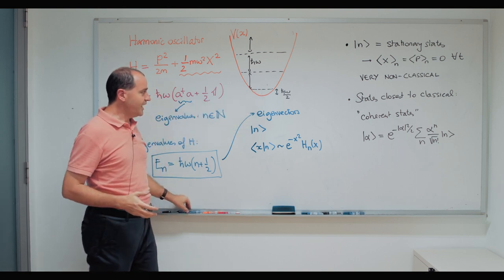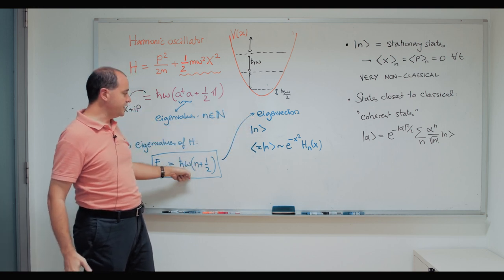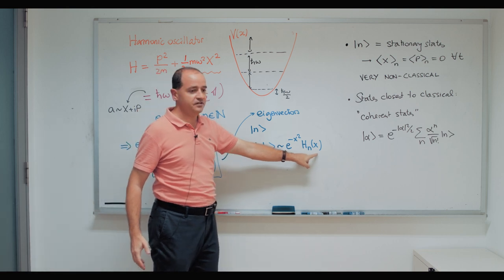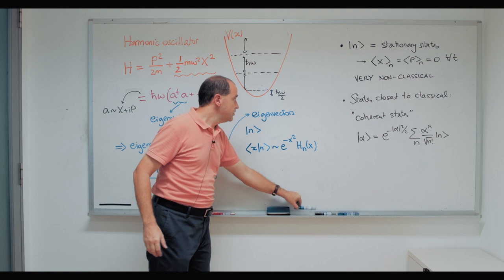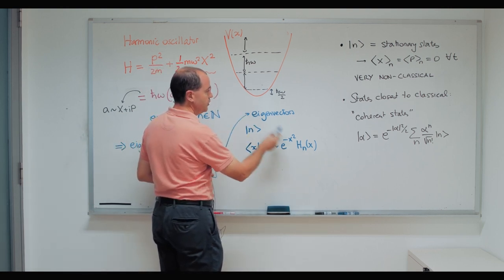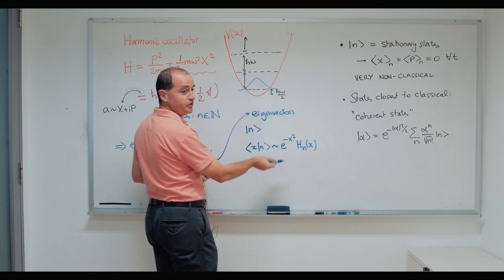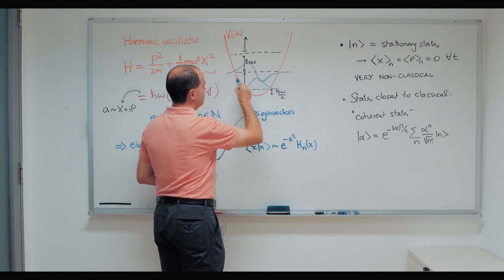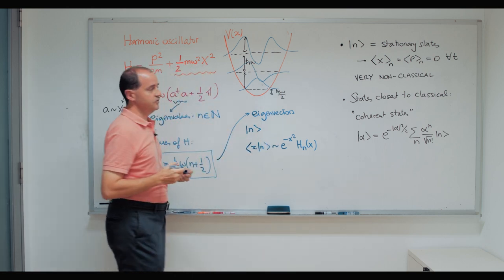What are the eigenvectors — the wave functions associated to these eigenvalues? They are given by a formula where a polynomial of degree n multiplies a Gaussian. Pictorially: the first one (degree zero polynomial) is a pure Gaussian; the second one is a degree-one polynomial times a Gaussian; the third is something with two nodes; and so on.